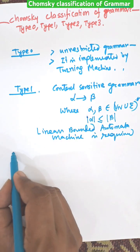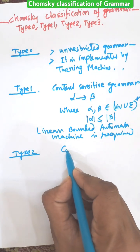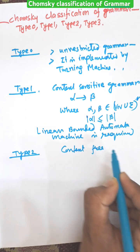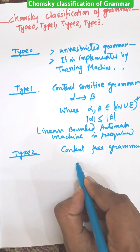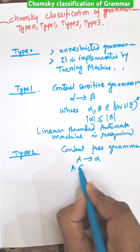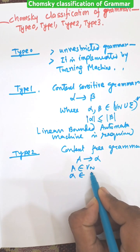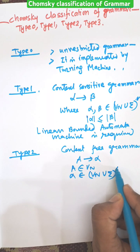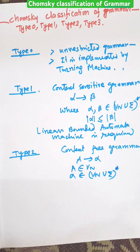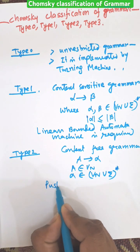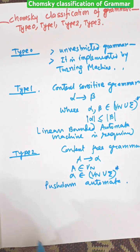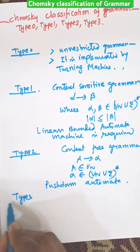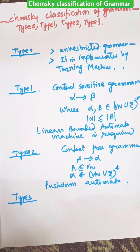Now, Type 2 grammar is known as context-free grammar. The production rule is A → alpha, where A belongs to Vn and alpha belongs to (Vn ∪ Σ)*, the closure of Vn union Σ. This is known as Type 2 grammar, and it is implemented with the help of a Pushdown Automata.